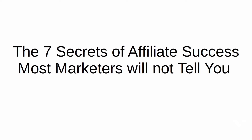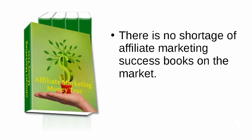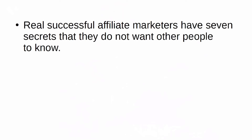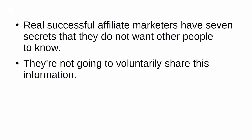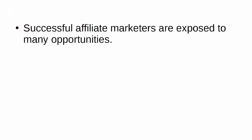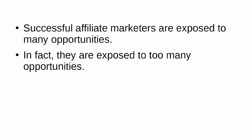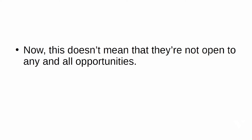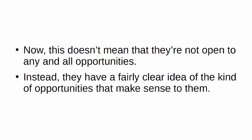The 7 Secrets of Affiliate Success Most Marketers Will Not Tell You. There is no shortage of affiliate marketing success books, but if you read any one of them, you probably will not be all that successful. Real successful affiliate marketers have 7 secrets they do not want others to know. They know how to say no: successful affiliate marketers are exposed to too many opportunities, so they've developed a great ability to turn them down. They are focused — they have a clear idea of the kind of opportunities that make sense to them.